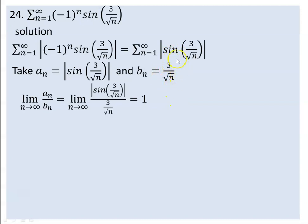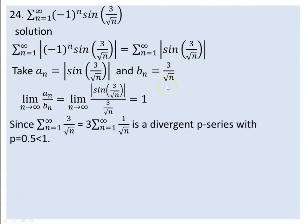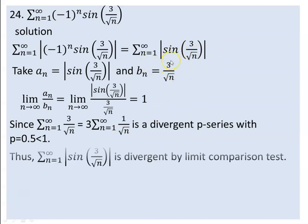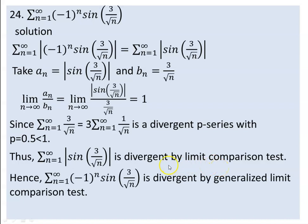The series given by 3/√n = 3 over n^(1/2) is a divergent p-series because p = 1/2, and 0.5 is less than one. So this is a divergent p-series. Therefore, the series of absolute values |sin(3/√n)| is also divergent by the limit comparison test.